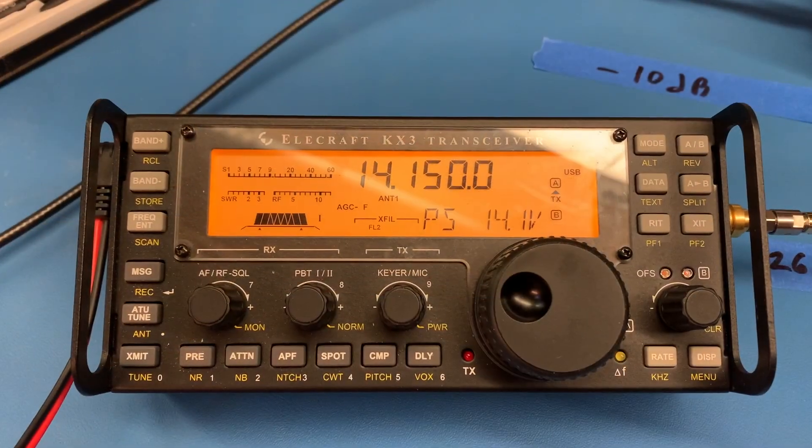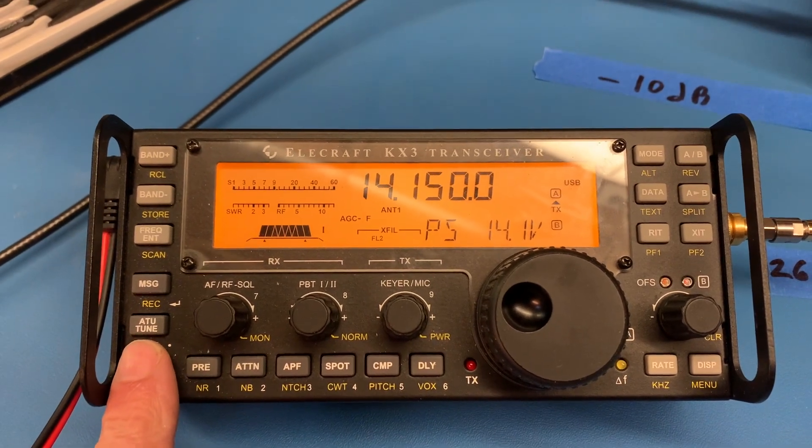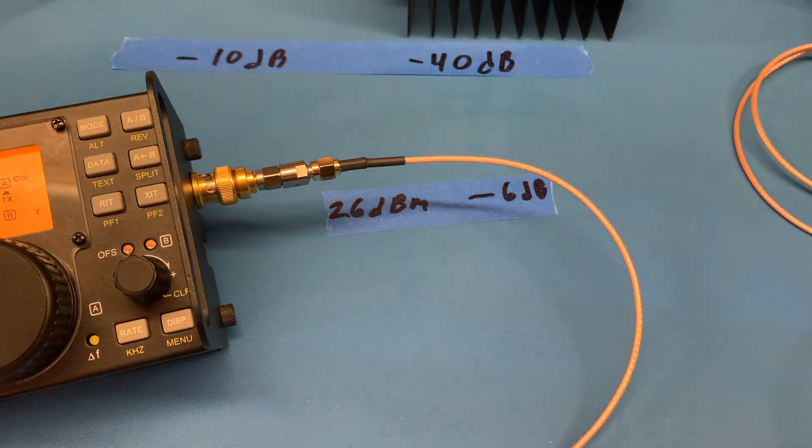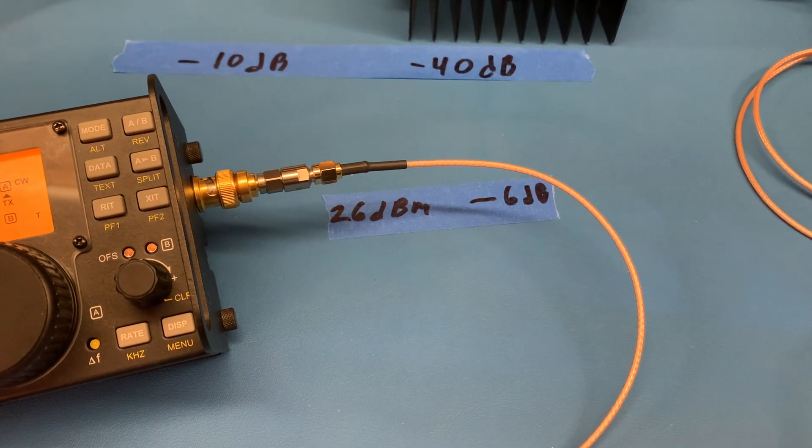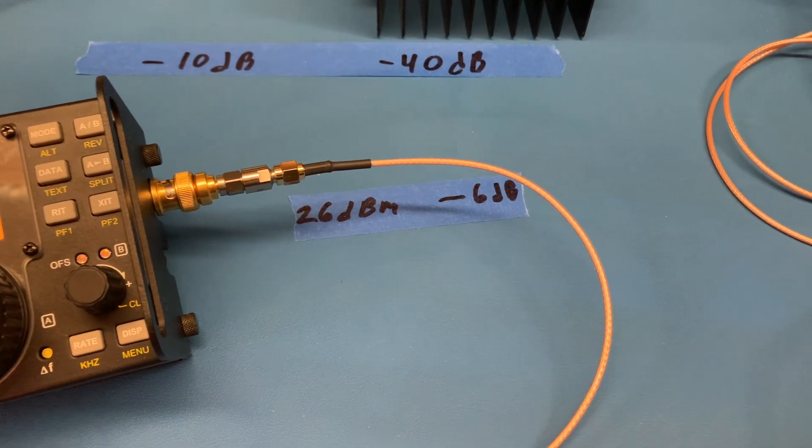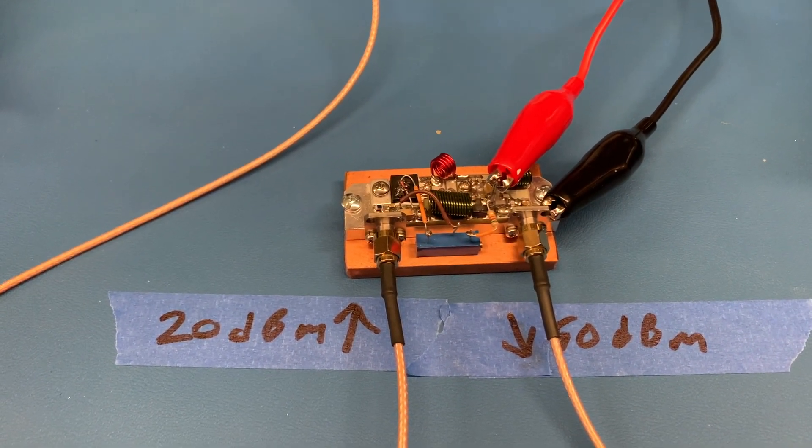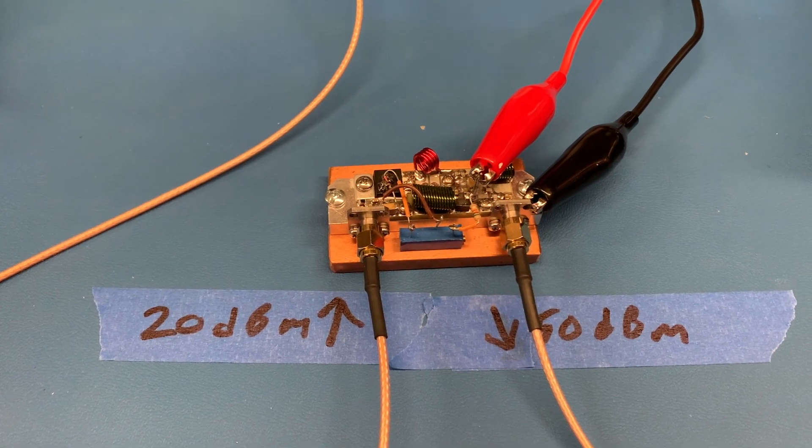So we've got a KX3 that's set to half a watt and we're using the tune mode to drive the RF out. It comes out at about 26 dBm and goes through a 6 dB attenuator. Then that is fed into the amplifier that comes in about 20 dBm and leaves at 50 dBm.